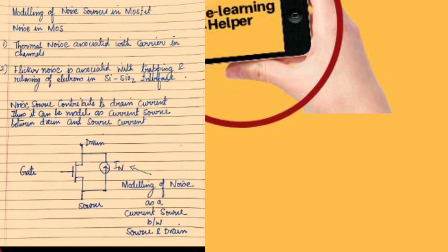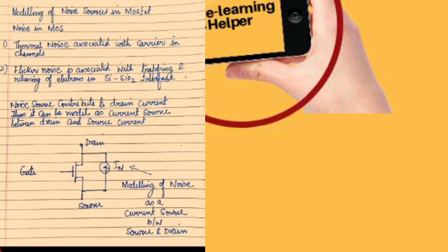Noise contributes to the drain current. The drain current id is the output for the MOSFET, so the noise is attributed to the drain current. Thus it can be modeled as a current source between the drain and the source. As you can see, we have modeled a MOSFET depicting the noise in the form of the current source IN, representing noise as a current source between the source and drain. The three terminals — gate, source, and drain — are depicted there.